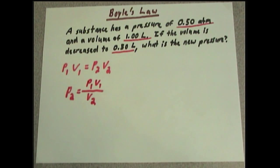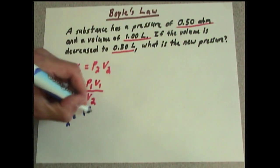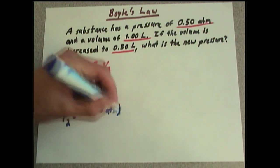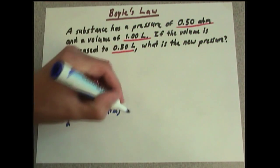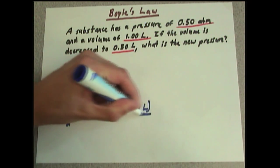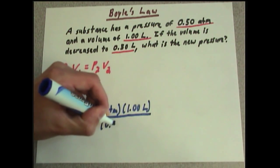So that means all we have to do is just plug in our numbers. We know that P2 is going to be the equivalent of the first pressure, which is 0.50 atmospheres, times the first volume, which is 1 liter, divided by the second volume, which is 0.50 liter.